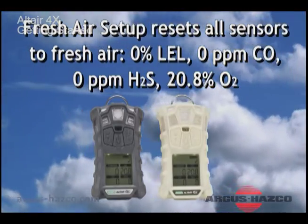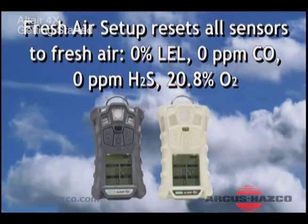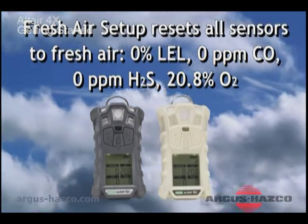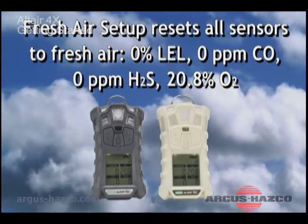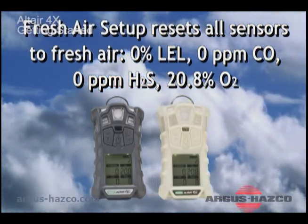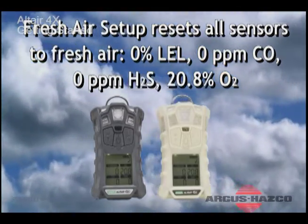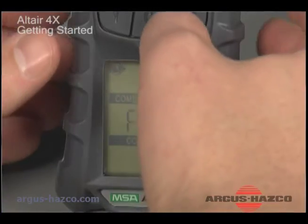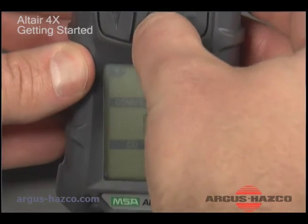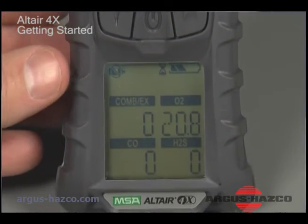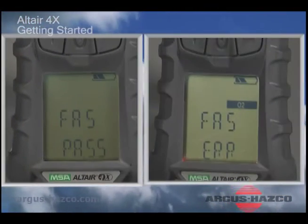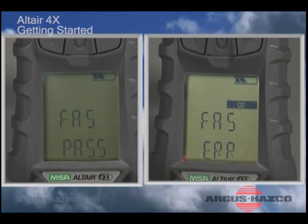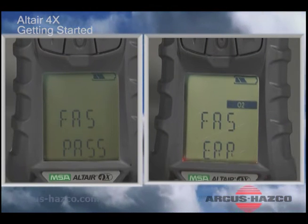Fresh Air Setup allows users to reset all sensors to fresh air values: 0% LEL, 0 ppm carbon monoxide, 0 ppm hydrogen sulfide, and 20.8% oxygen. To run Fresh Air Setup at this time, simply push the Center or Accept button. FAS Pass or FAS Error will quickly display. If FAS Error displays, a full instrument calibration should be performed.